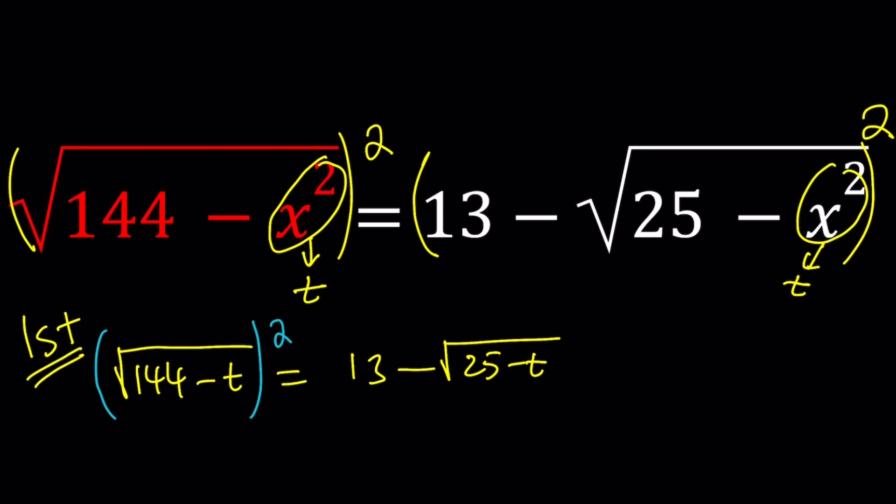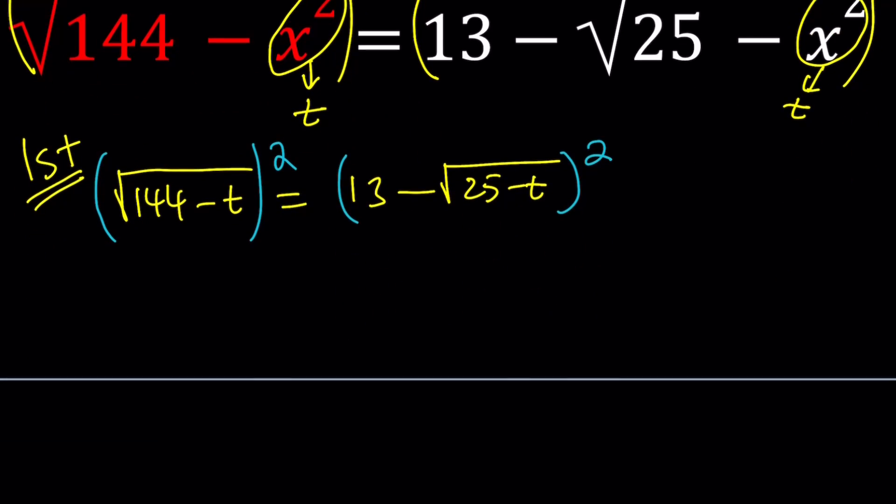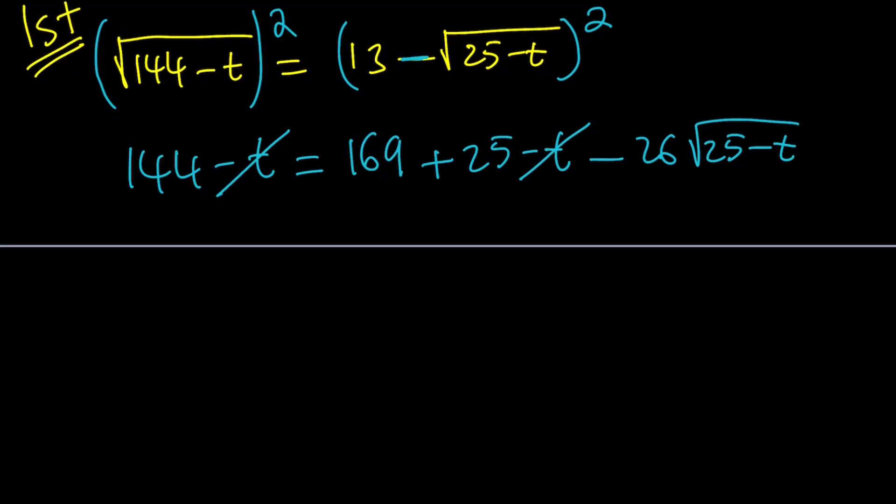Now we get the square root of 144 minus t equals 13 minus the square root of 25 minus t. Let's square both sides. When we square, we get rid of the radical on the left, 144 minus t equals - here we have the square of a difference, 169 from a squared plus b squared minus 2ab is going to give us 26 times the radical. And of course, we can simplify this a little bit more. Minus t cancels out.